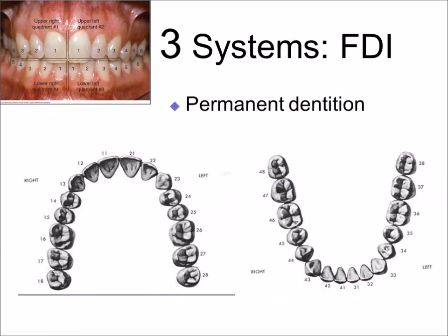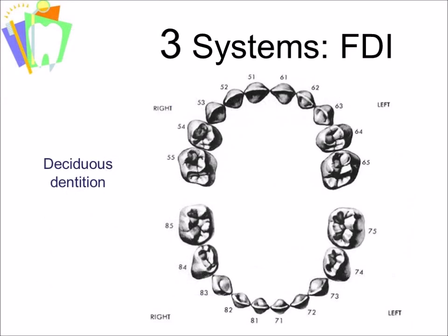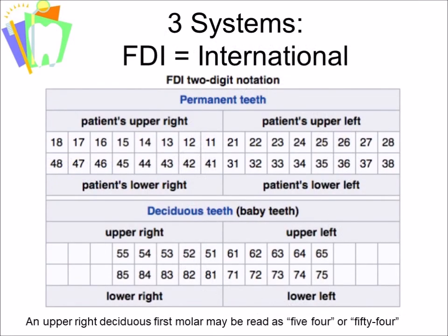Here's a diagram showing all 32 teeth with their numbers using the FDI system, and likewise the deciduous dentition with FDI numbers to denote each deciduous tooth. A table also shows each tooth and its number in the FDI International System — it is a two-digit notation. Be careful: tooth number 14 in the Universal System is a totally different tooth from tooth number 14 in the FDI system.